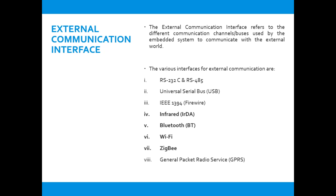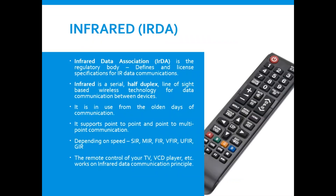We also have GPRS — General Packet Radio Service — which is popular in navigation systems. As per the VTU course syllabus, we will be concentrating on the four highlighted ones: infrared, Bluetooth, Wi-Fi, and Zigbee. First, let us briefly look at infrared communication.